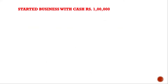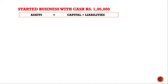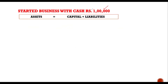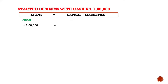Starting with our first transaction: a business has been started with cash rupees 1 lakh. What will be its impact on capital, liability, and assets? When the businessman brings cash into the business, the cash of the business is rising. Also, the amount invested by the owner in the business is known as capital. So cash will rise by rupees 1 lakh and capital will also increase by rupees 1 lakh without any change in liabilities.